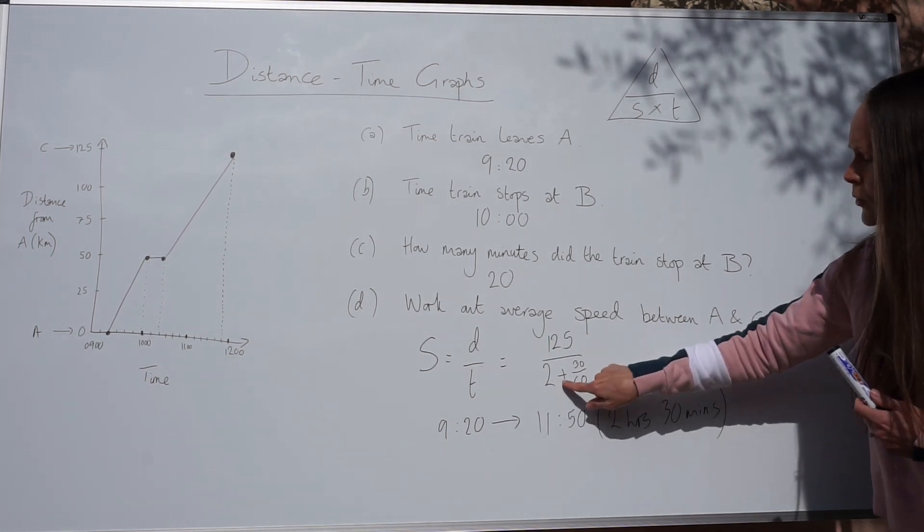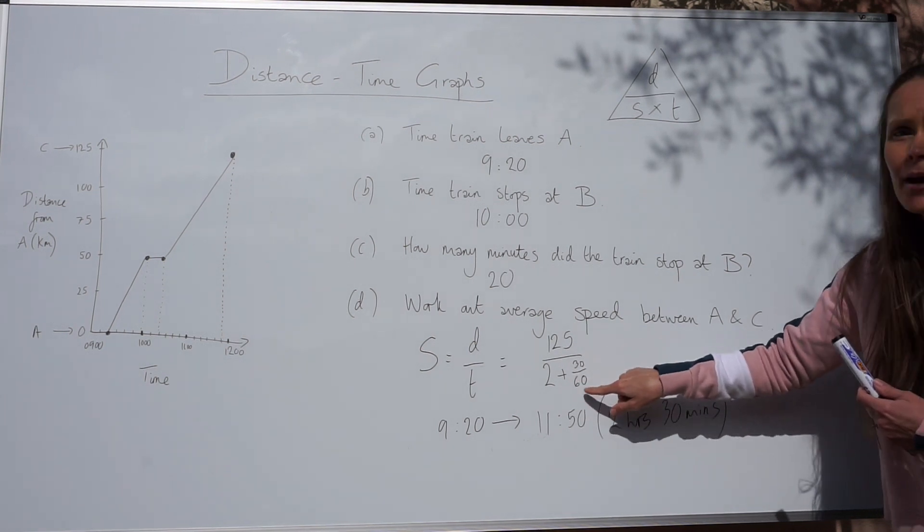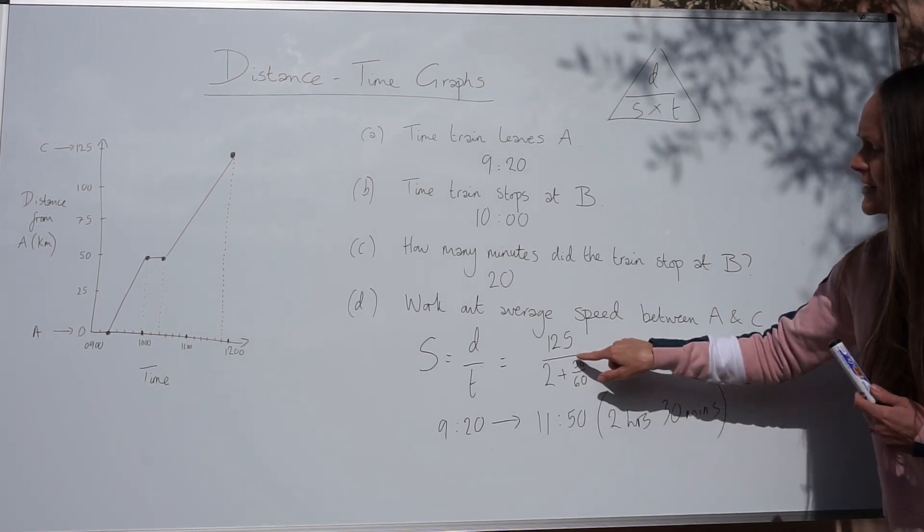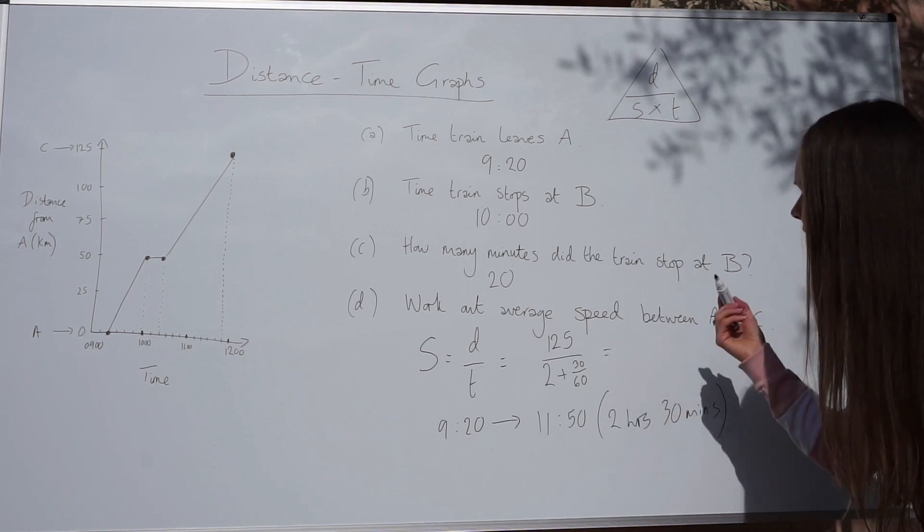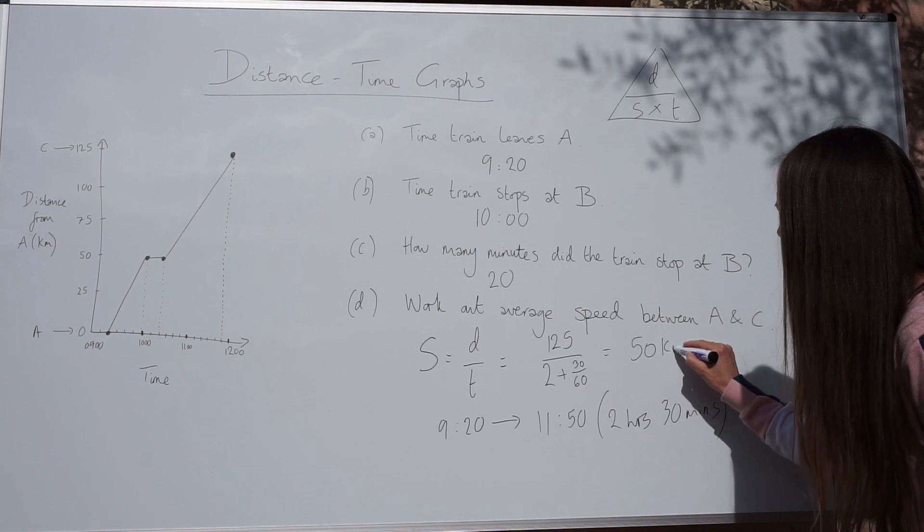So now this is 2 plus half an hour, 30 minutes. So it's now converted. Now it's in this form. You can put it in your calculator and work it out. And you should get 50 kilometres per hour.